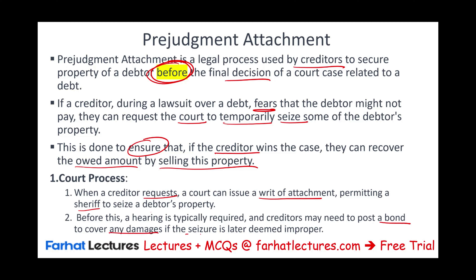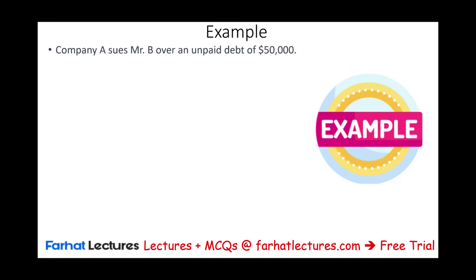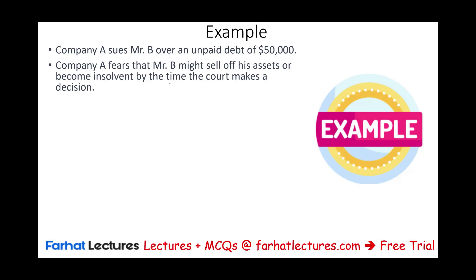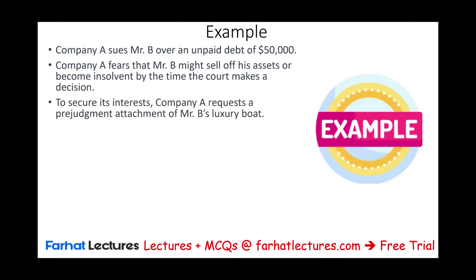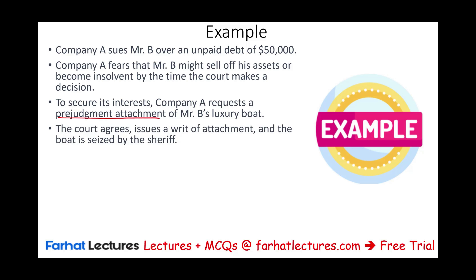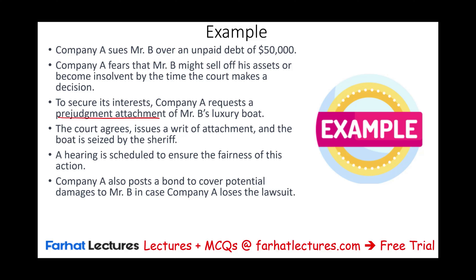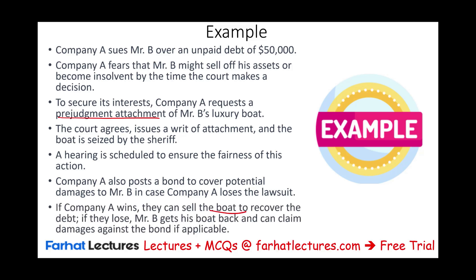The creditor has to put up money to cover damages and costs related to this, so they must be almost perfectly sure they need the pre-judgment attachment. For example, Company A sues Mr. B over an unpaid debt of $50,000. Company A fears Mr. B might sell his assets or become insolvent before the court decides. To secure their interest, Company A requests a pre-judgment attachment of Mr. B's luxury boat. The court agrees, issues a writ of attachment, and the boat is seized by the sheriff. A hearing is scheduled to ensure fairness. Company A also posts a bond. If Company A wins, they can sell the boat to recover the debt. If they lose, Mr. B gets the boat back and can claim damages against the bond.